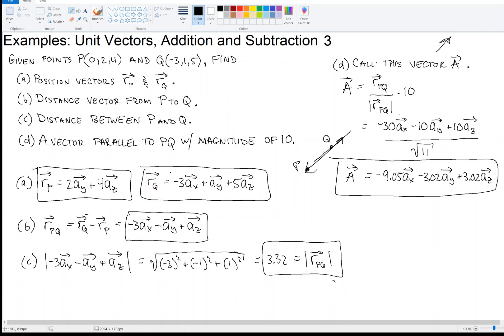Then another acceptable answer is the reverse of that, right? A vector parallel to that line, so we can reverse that. So we could say, or 9.05 AX plus 3.02 AY minus 3.02 AZ, right? That's acceptable as well.